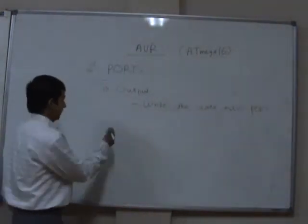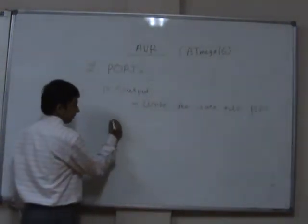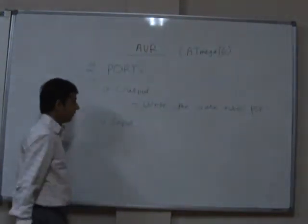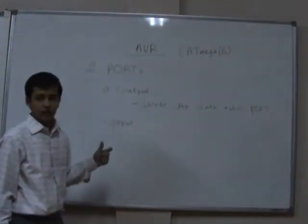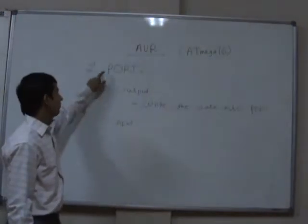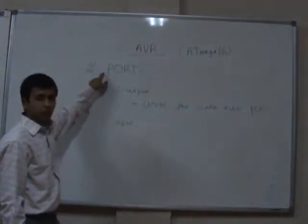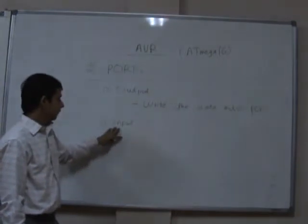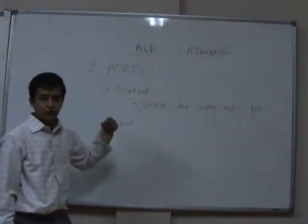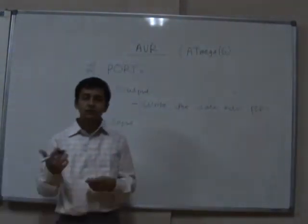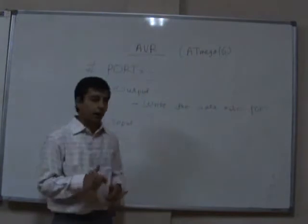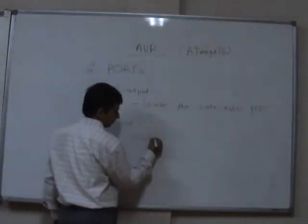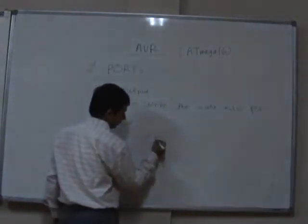The second thing is, whenever we have configured the port as an input port, the function of the port register changes. During that time, the port register is used to configure the type of input port. Those two types are pull-up and tri-stated.